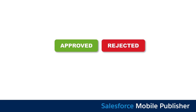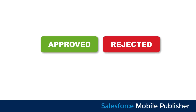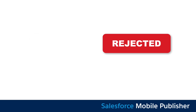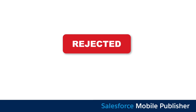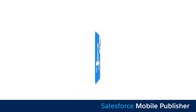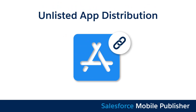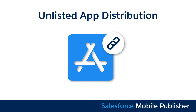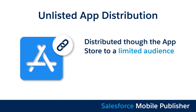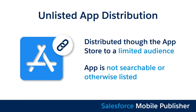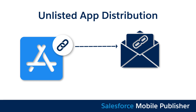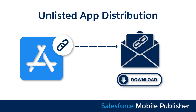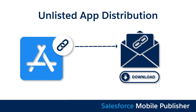Apple does not approve every app intended for public distribution. If your app is not approved by Apple for public distribution, there is an alternative distribution option called the Unlisted option. Unlisted provides you the ability to distribute to your end users, but the app is not searchable via the web or within Apple's App Store. The app page link can simply be sent to end users for download and installation purposes.